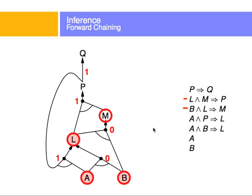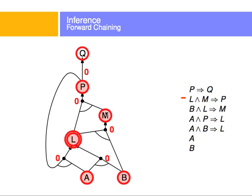I explore L and decrease the literal count of all clauses where L is involved. The clause with L and M now has a count of zero, and the one going to P has a count of one. Because L and M's count is zero, I've deduced that L and M are both true — so M is also true. I add M to the set of expressions to evaluate.